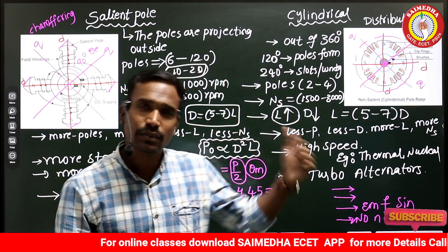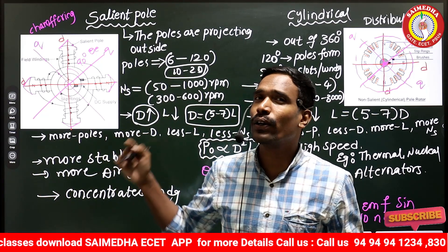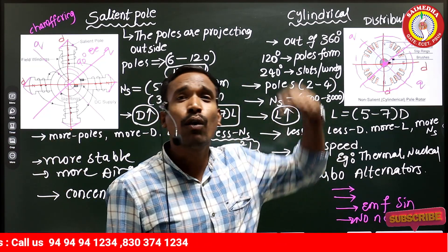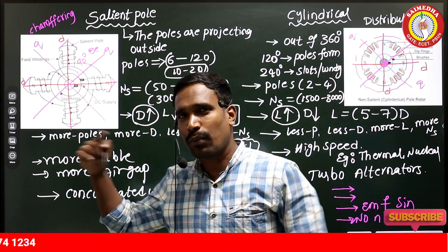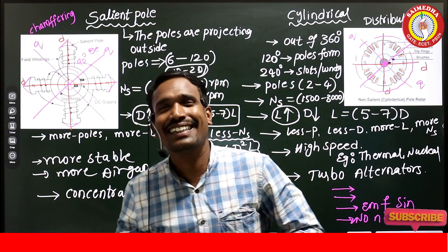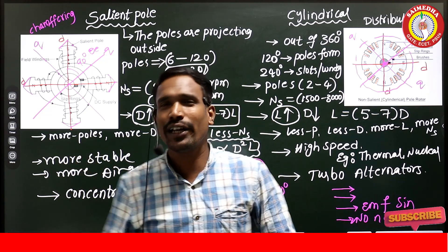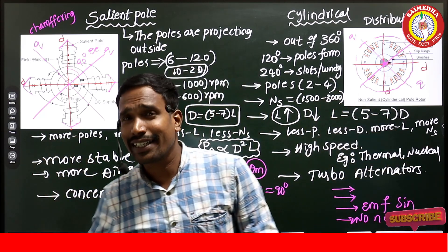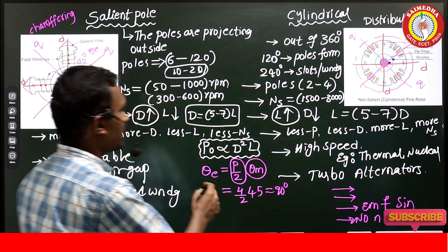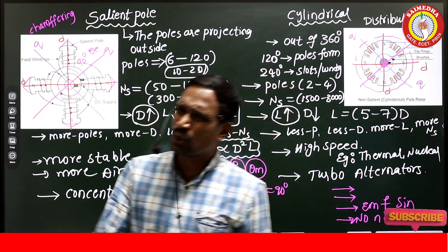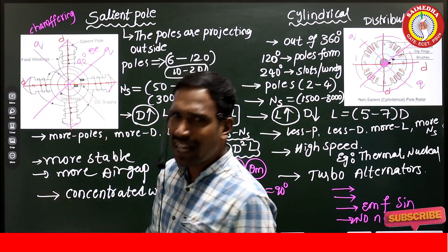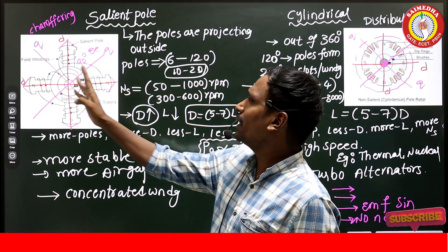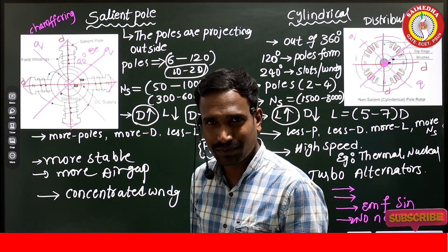In conclusion: salient pole versus smooth cylindrical. Salient pole has more number of poles, less speed, more diameter, and less axial length — used in hydro alternators. Cylindrical has fewer poles, more speed, less diameter, and more axial length — used in turbo alternators. Salient pole needs chamfering; cylindrical does not. Salient pole has more air gap and more stability; cylindrical has less air gap and less stability. Salient pole uses concentrated winding; cylindrical uses distributed winding. Also, θ_electrical = (P/2) × θ_mechanical. The number of axes equals the number of poles — with 4 poles, there are 4 axes: 2 are Q-axes and 2 are D-axes.